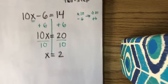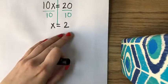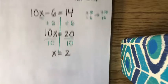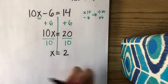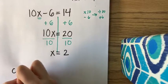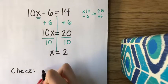But to check myself to make sure I did it right, I'm going to take this solution, and I'm going to plug it back into my equation. 10x minus 6 equals 14. That means that in my equation, I'm going to replace x with my solution 2.